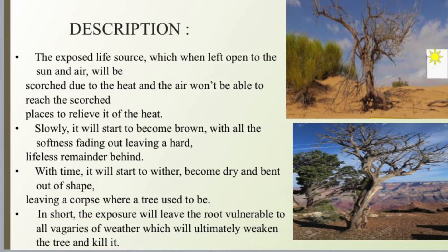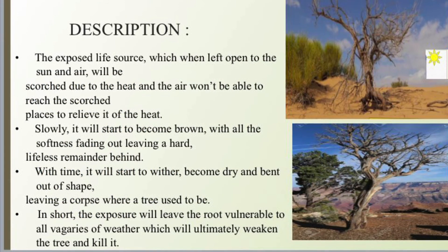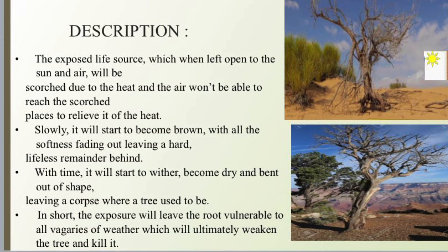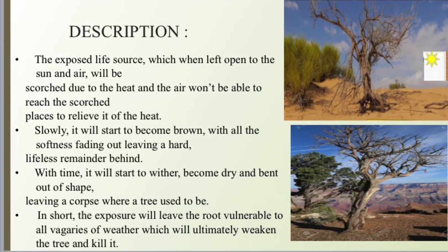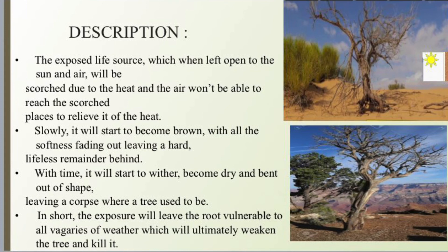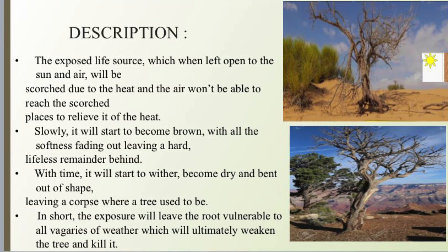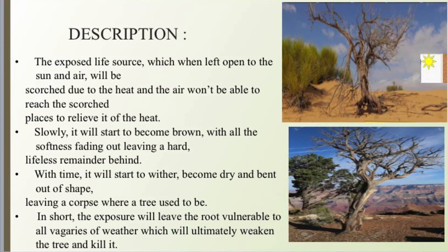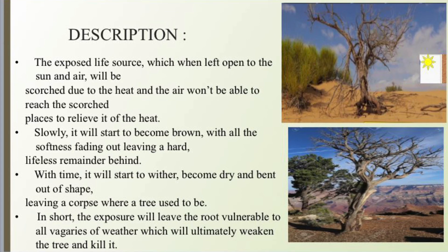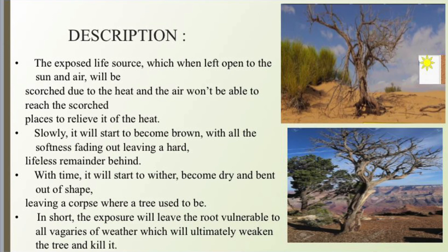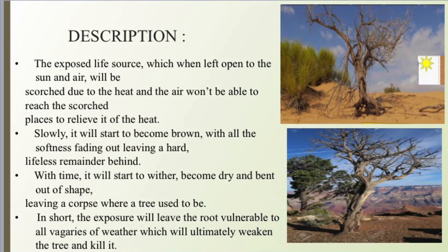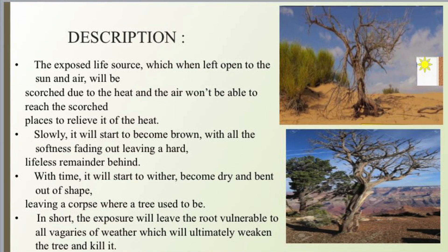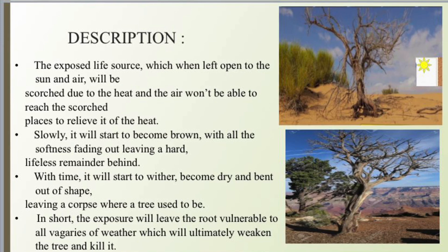In the last stanza, the poet tells us that the exposed life source — the root — when exposed to sun and air, will be scorched due to excess heat, and slowly it will start to become brown, with all the softness fading out, leaving behind a lifeless remainder. With time it will become dry and shapeless, leaving a corpse where a tree used to be. In short, this exposure will leave the root vulnerable to all the vagaries of weather, which will ultimately weaken and kill the tree.